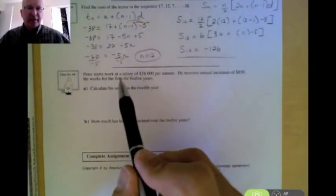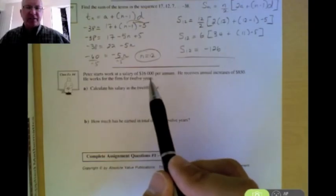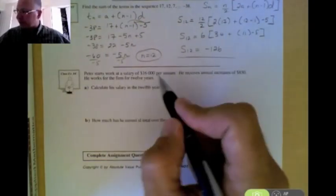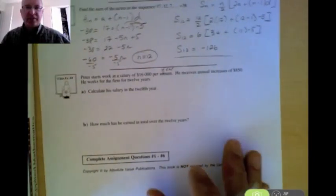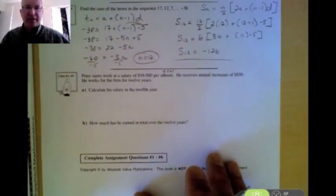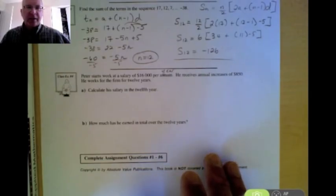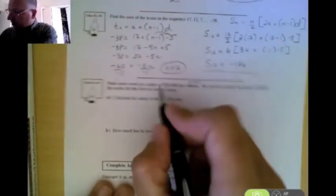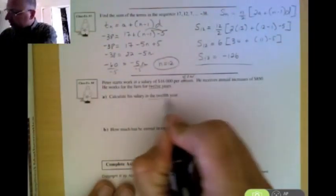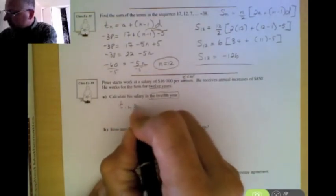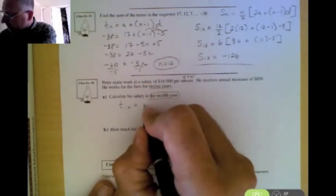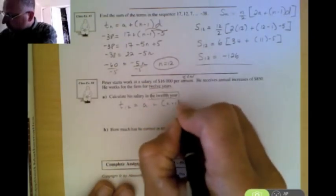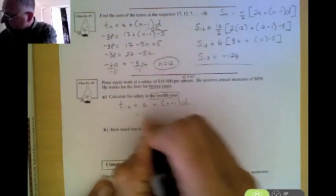It says, Peter starts work at a salary of $16,000 per annum. Per annum is the same thing as saying per year. He receives an annual increase of $850. He works for the firm for 12 years. So it first of all wants us to find the salary in the 12th year. So it wants us to find our t of 12, our t of n. Remember, that's a plus n minus 1 times d. So a, the first year, he makes $16,000. The common difference is positive $850 because he gets an $850 increase each year.